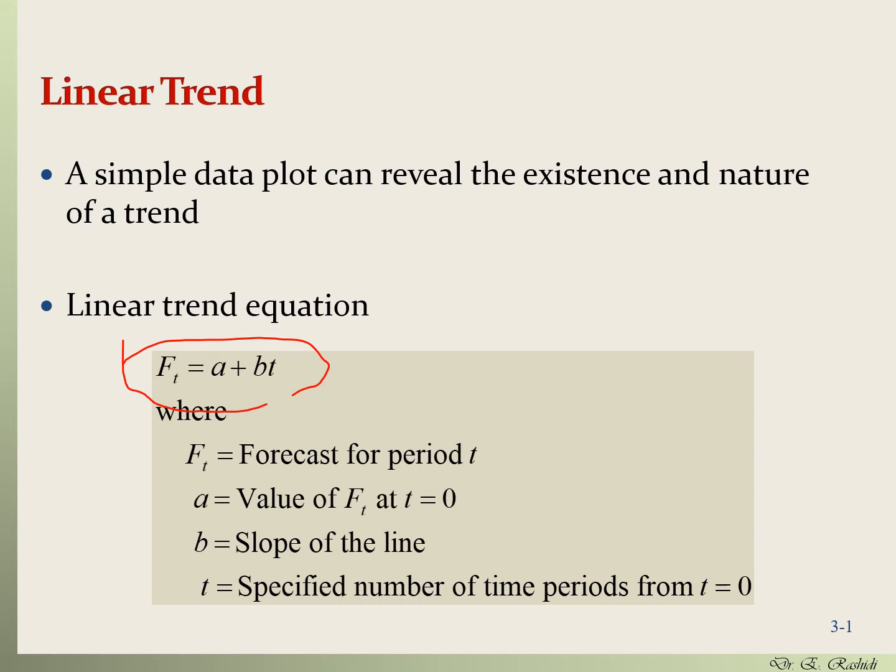The formula for linear trend is: f(t) is the forecast for period t, and the line has two components — the slope and the intercept. The intercept, a, is the forecast value when t is zero. b is the slope of the line, and t is the number of time periods, which can be negative for past periods or positive for future periods.